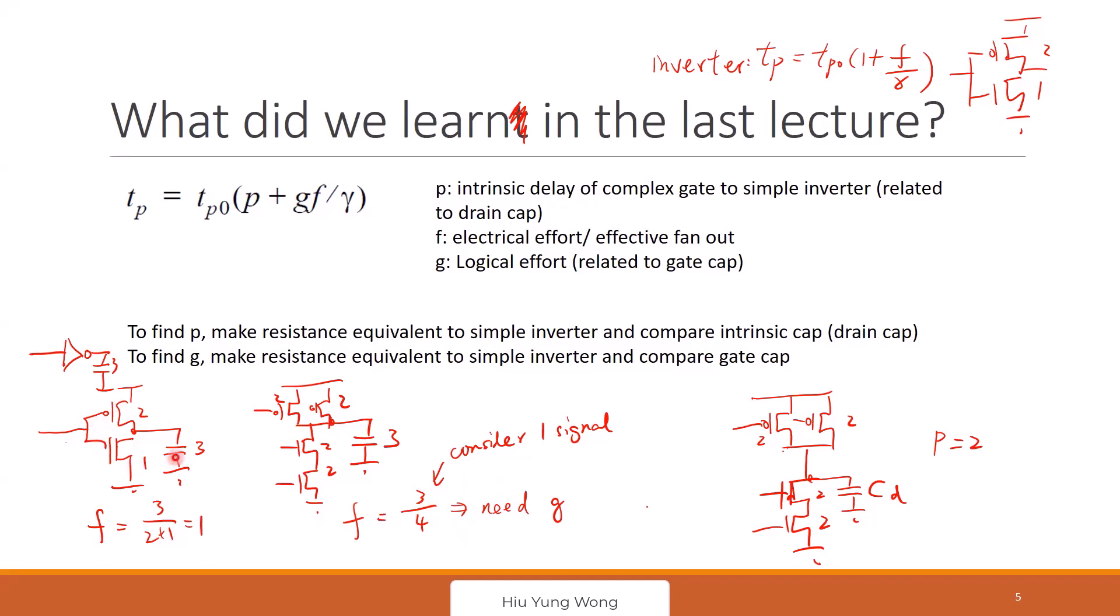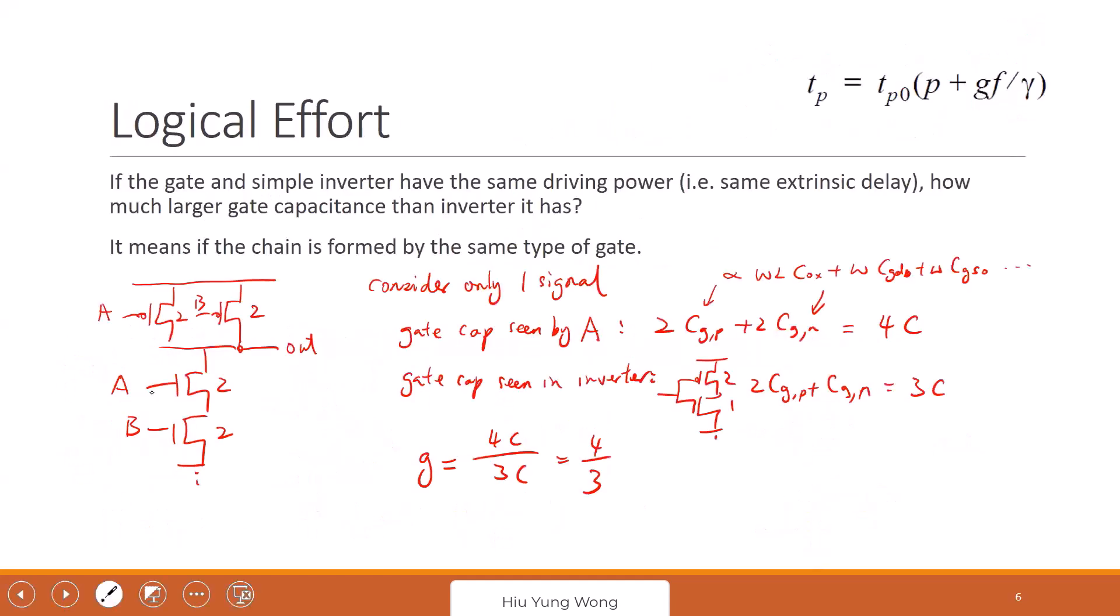If I only have one driving it, then I should have the similar extrinsic delay. So maybe let me erase it, because when you study, you might correlate to the other part. This time I'm going to say only consider one signal. So if you have G multiplied 3 divided by 4, then this one becomes 1. For this one, do you agree if I size it this way, the extrinsic delay should be the same? Because I have the same R, same C. That's why I need to multiply by G.